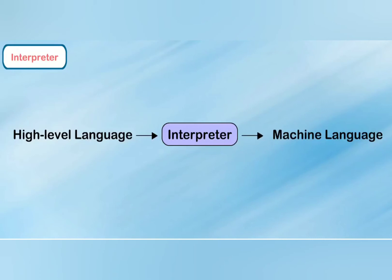It directly executes the operations mentioned in the source program if the input is given by the user. The error notification will occur as soon as the interpreter gets the first error.